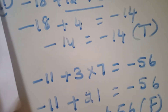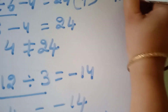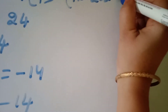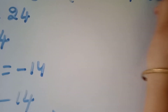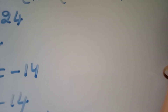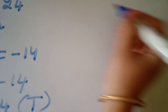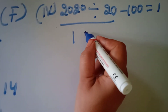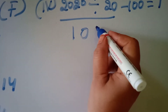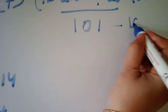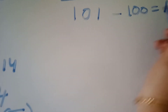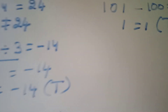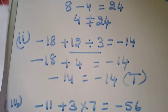Fourth one: 220 is divided by 20 minus 100 equal to 1. First, divide: 220 divided by 20 equals 11. So 11 minus 100 equals... wait, 11 minus 10 equal to 1. One equals 1. This is true. This is the full solution.